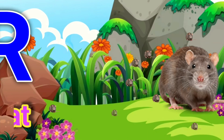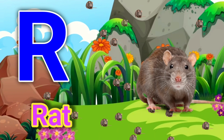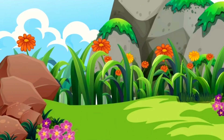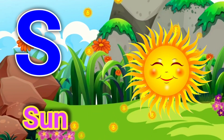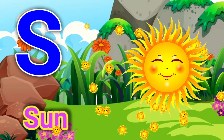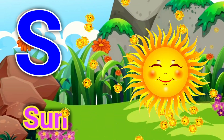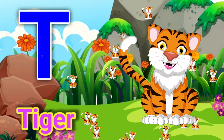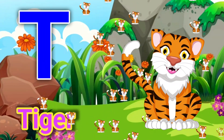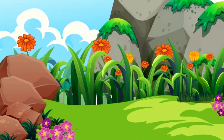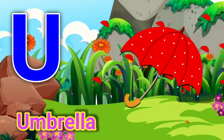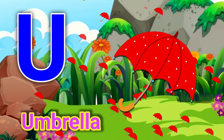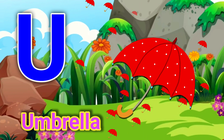R for red, S for sun, T for tiger, U for umbrella.